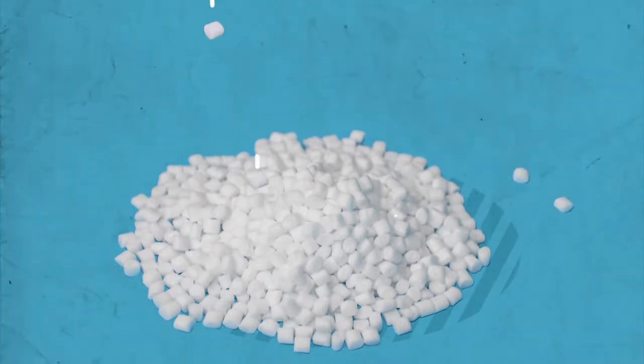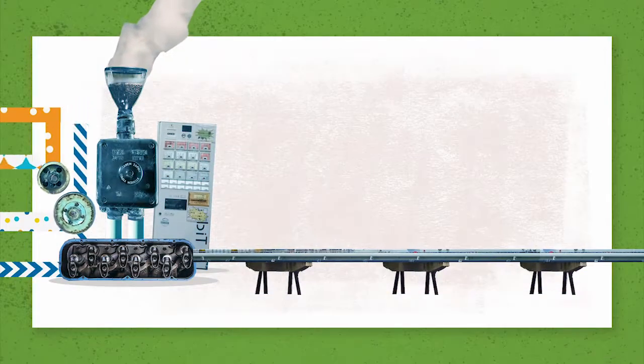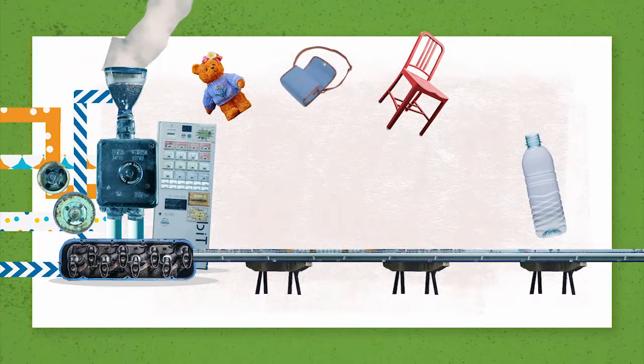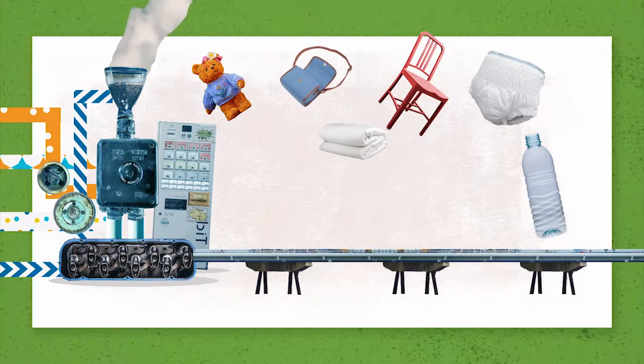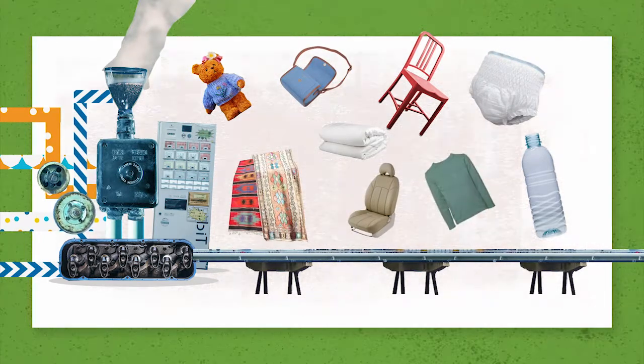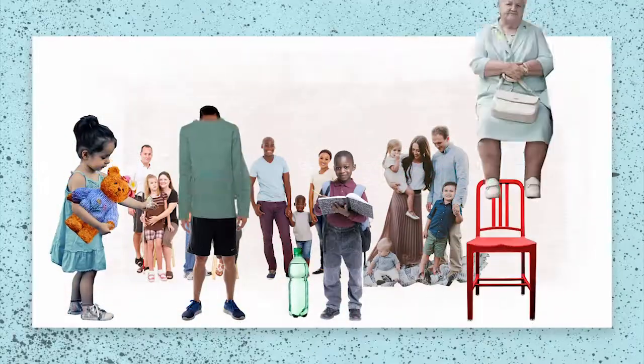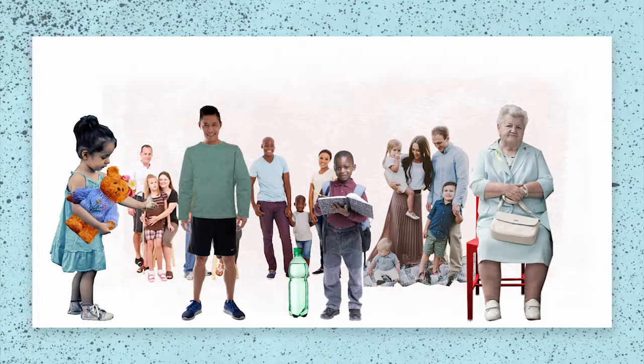In the form of small pellets, the recycled PET is ready to be used as a material for a wide range of products, such as bottles, furniture, toys, bags, diapers, duvets, car seats, carpets or clothes and other products. All of which we encounter in our everyday lives.